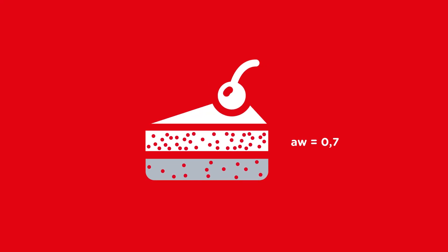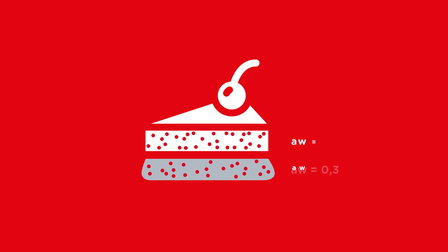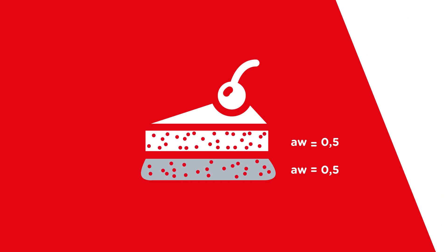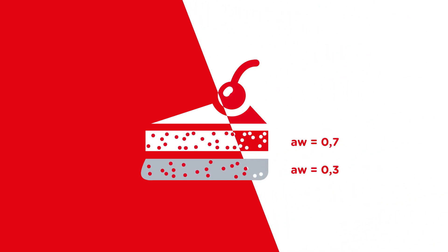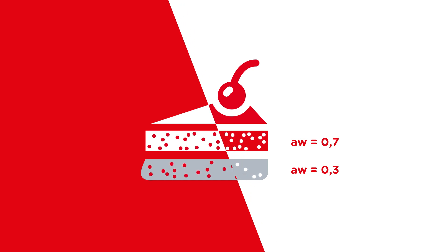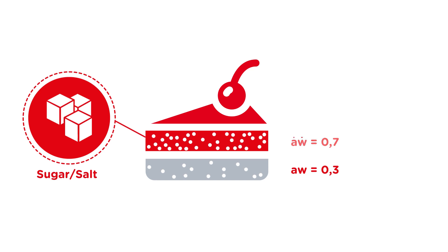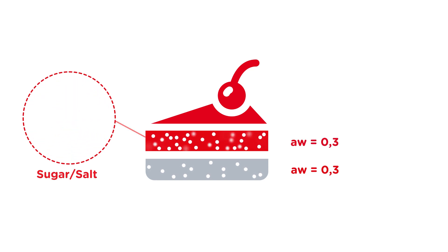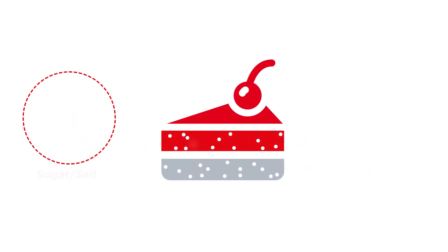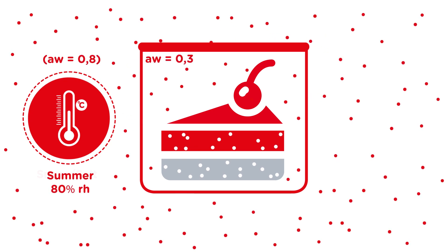Free water always moves from areas in a product with a high AW value to those with a lower AW value. This property results in undesirable changes, such as a soggy biscuit base in a cheesecake. You can effectively reduce the internal water migration by being aware of your product's precise differences in AW values, by looking at humectants — which are additives such as sugar and salt that bind the free water — and through careful climate control and appropriate packaging, for example.